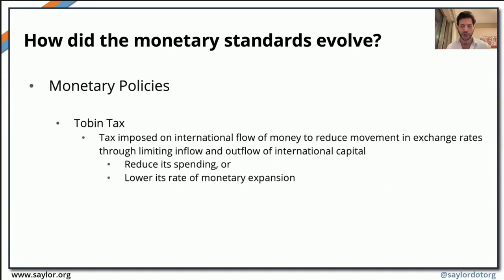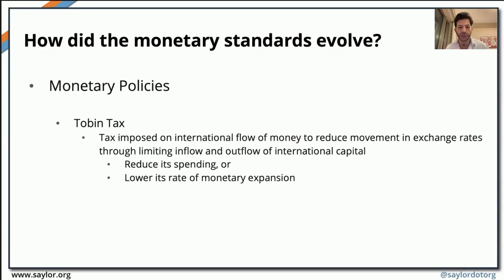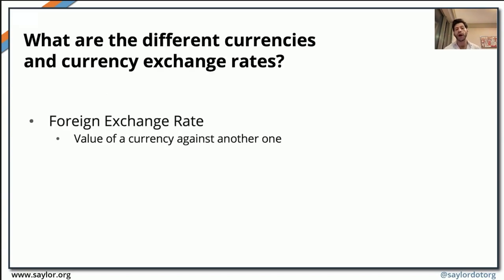There is another type of monetary policy that some countries opt for, known as the Tobin tax. The Tobin tax is simply a tax that a government imposes on the international flow of money — international flow of capital — in a way that limits the inflow and outflow of international capital and reduces the movement of exchange rates. Some states use it to lower the rate of monetary expansion or to try to control rising debt, like Italy in 2013.